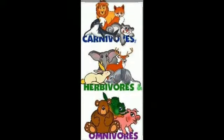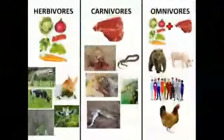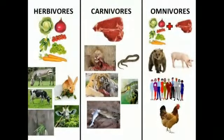Children, different animals eat different kinds of food — they don't eat the same kind of food. On the basis of their food, we have different types of animals: carnivores, herbivores, and omnivores.